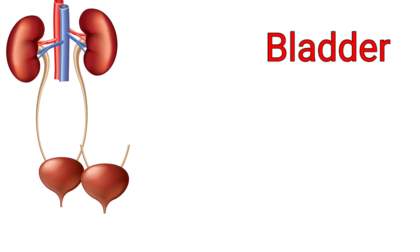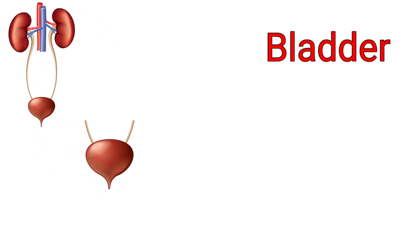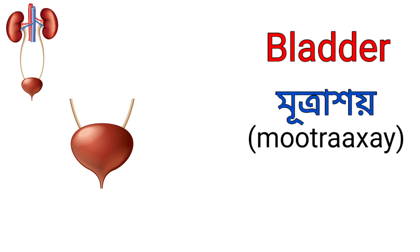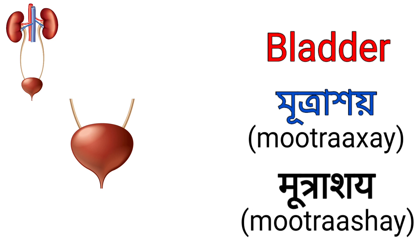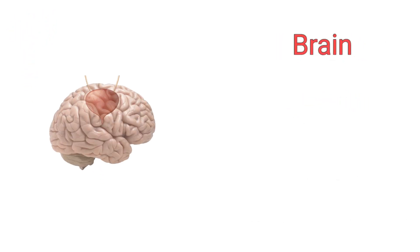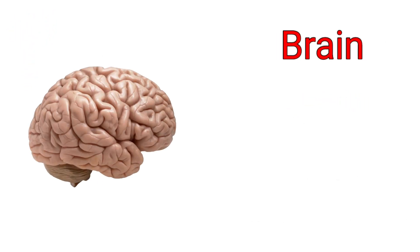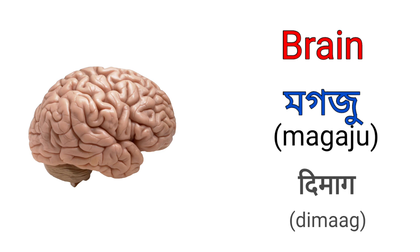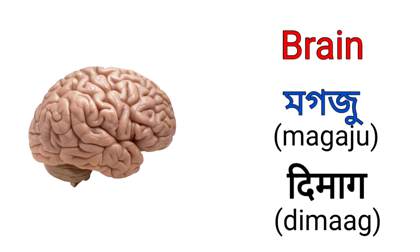Bladder. It's called Mutra Khoi in Assamese and it's called Mutra Sae in Hindi. Brain. It's called Mogojo in Assamese and it's called Dimag in Hindi — that means Mastisk.